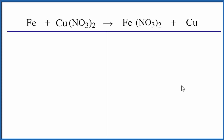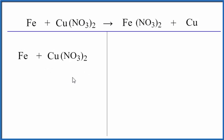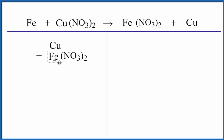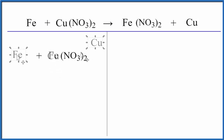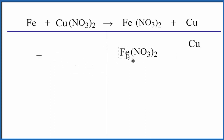Let's see what this means. We have iron plus copper 2 nitrate. If we copy this part of the equation and paste it down here, let's see how this reaction proceeds. This is called a single displacement reaction. The iron comes in and displaces the copper. Iron is a more active element, so it can push the copper away and then bond with the nitrate. Now we have iron nitrate and copper, just like on this side of the equation — copper, and then iron nitrate together.